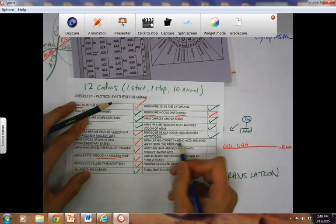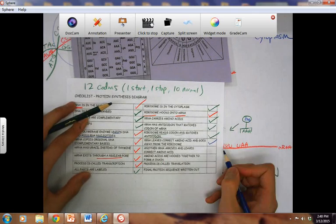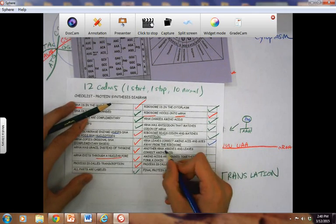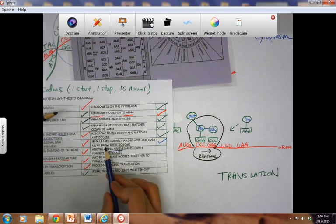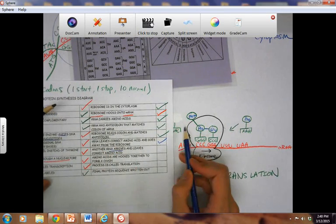TRNA leaves the correct amino acid and goes away. Check. Another TRNA arrives and leaves. Good. So another one's arriving and that one would be this one. TRNA leaves the correct amino acid and goes away. That would be this one.